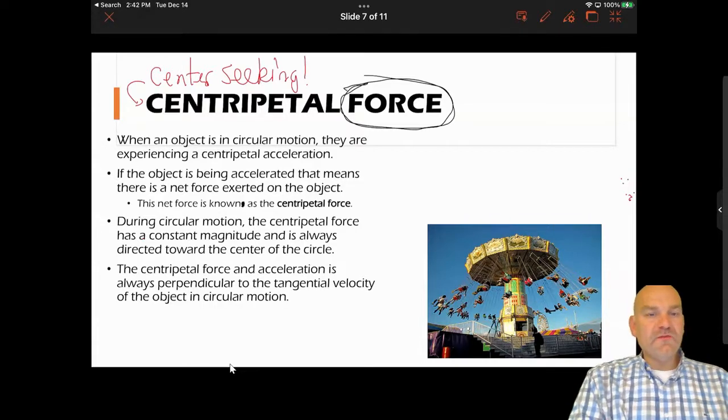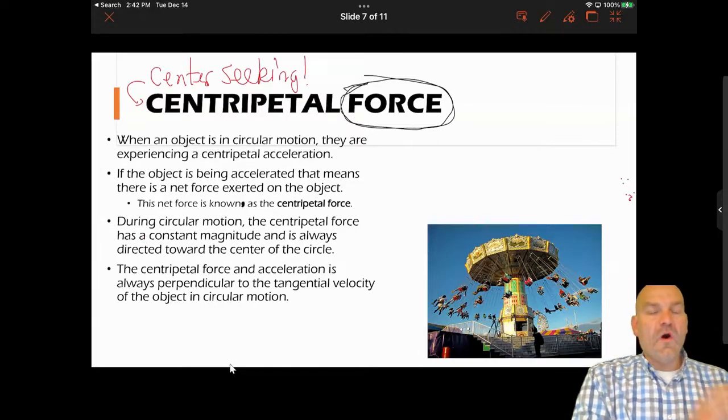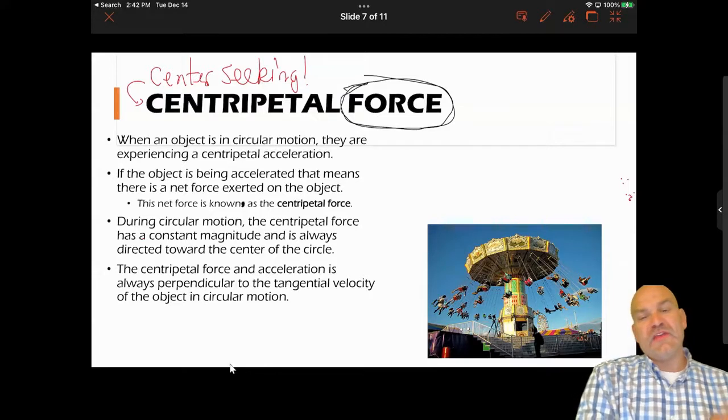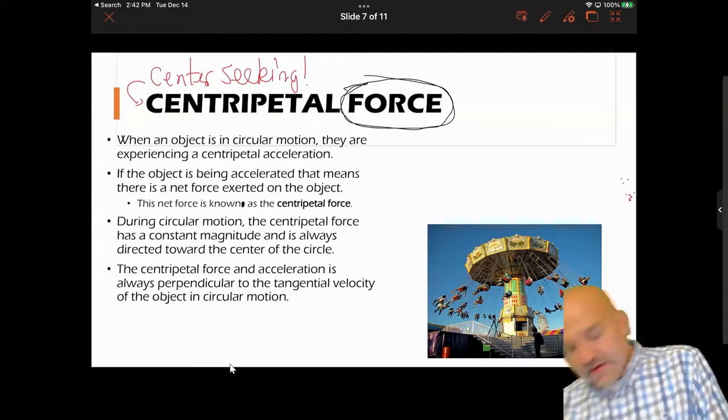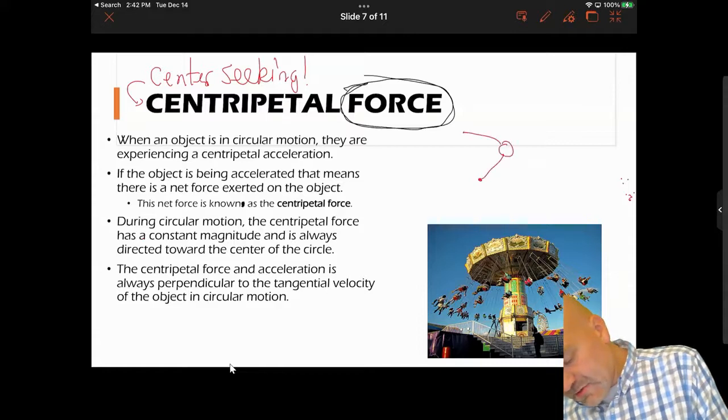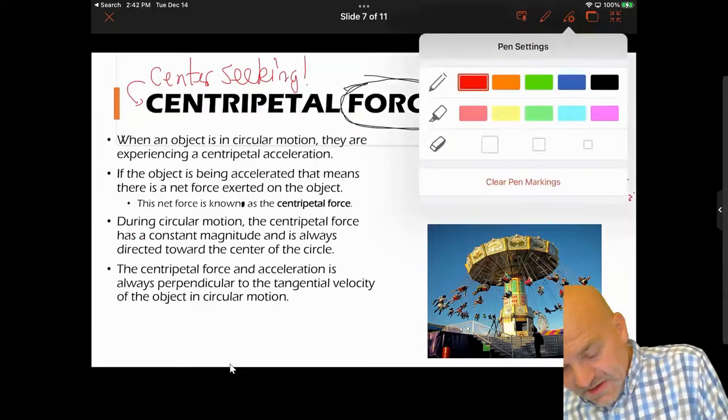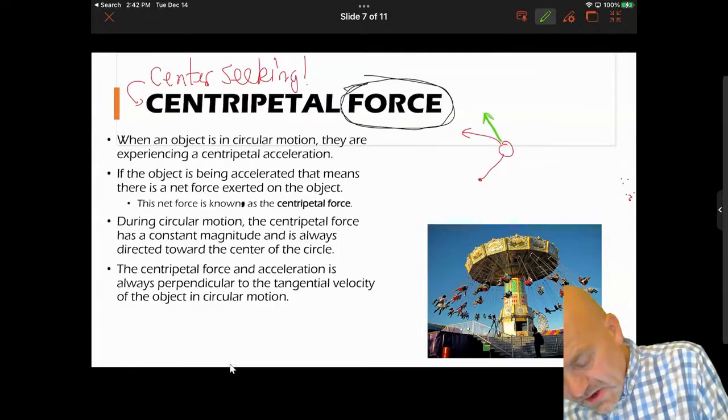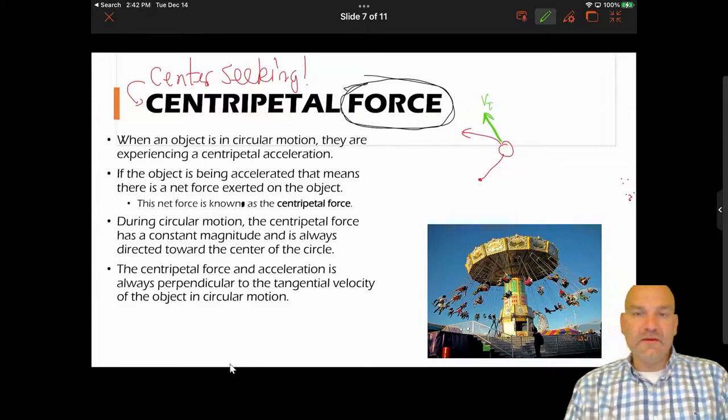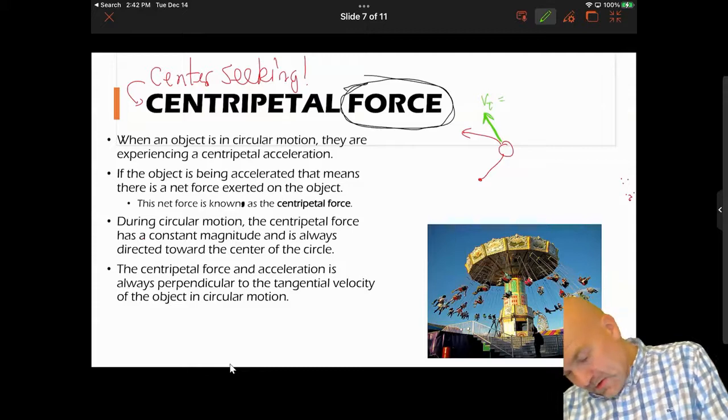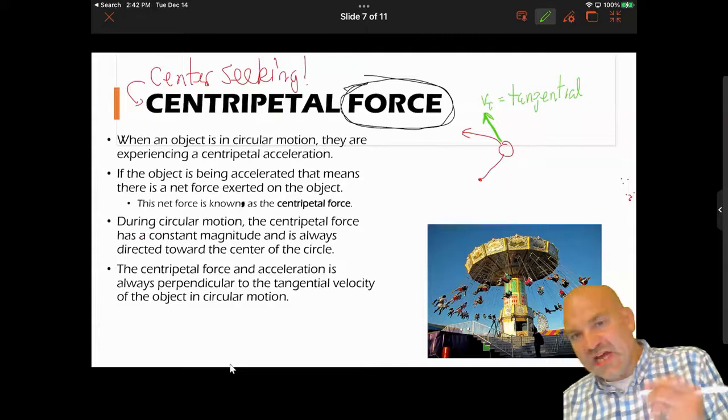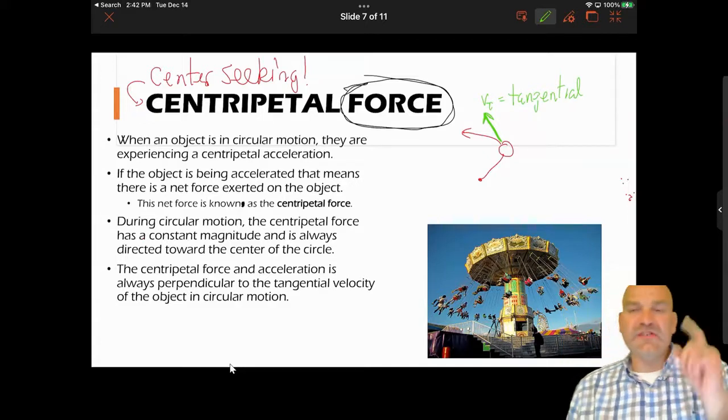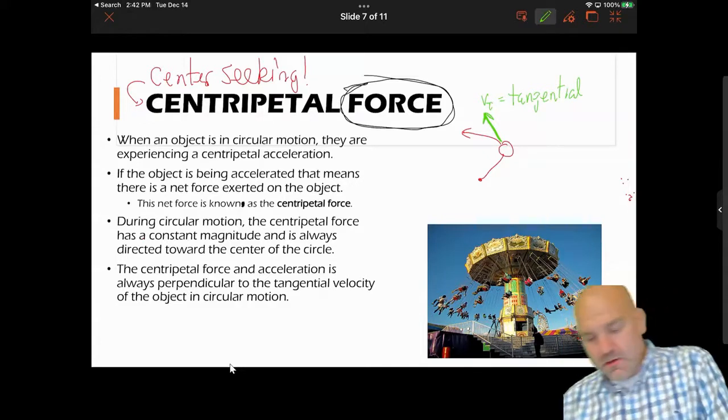The centripetal force and acceleration is always perpendicular to what we call the tangential velocity, because if I have an object in circular motion, that velocity is tangent to the circle. So this is something that we call v_t. Why is it called v_t, or tangential velocity? Because remember, a tangent only touches a curve at one point.